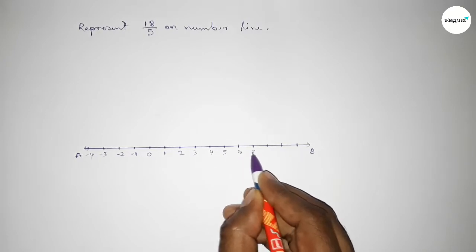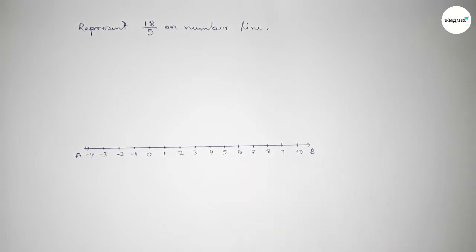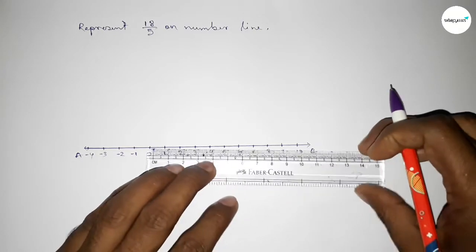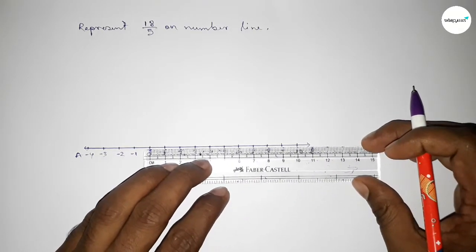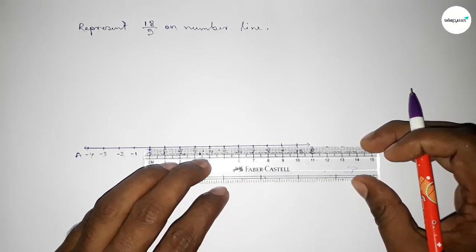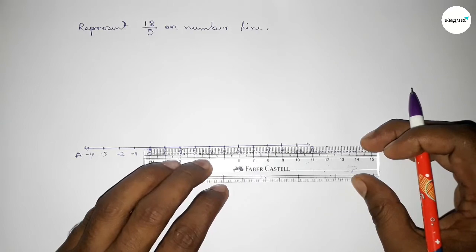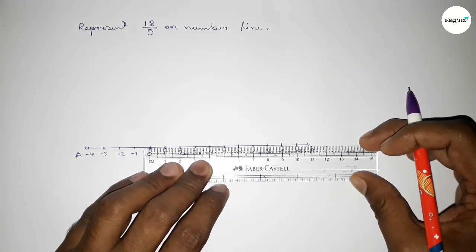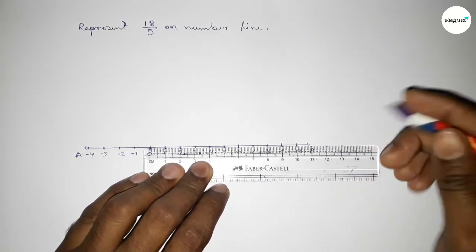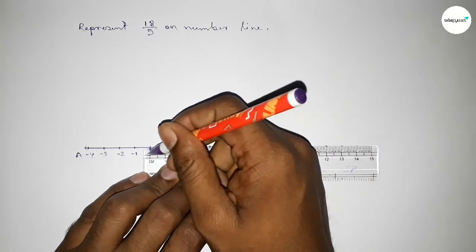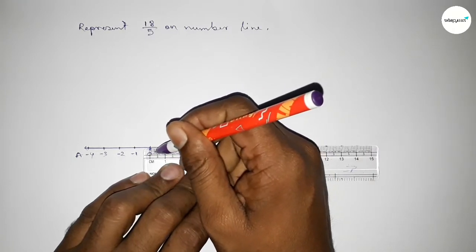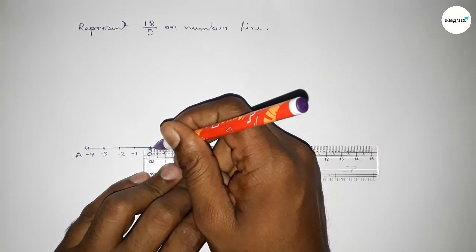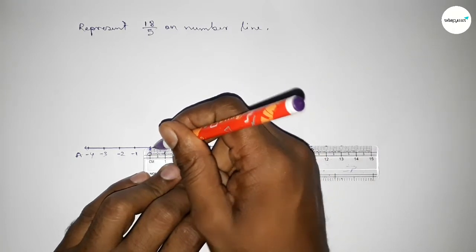4, 5, 6, 7, 8, 9, 10. Now we have to divide the distance between any two numbers into 5 parts. If we divide the distance between any two numbers into 5 parts, then the length of each part equals 0.2 unit. So first dividing the distance between 0 to 1: the first part is 0.2.